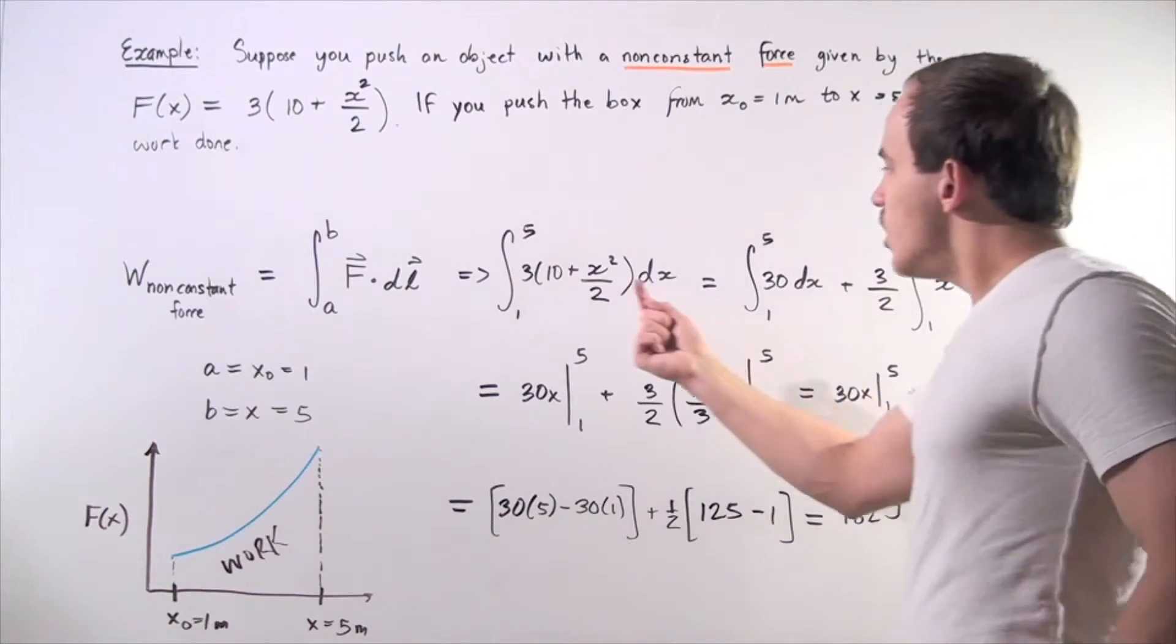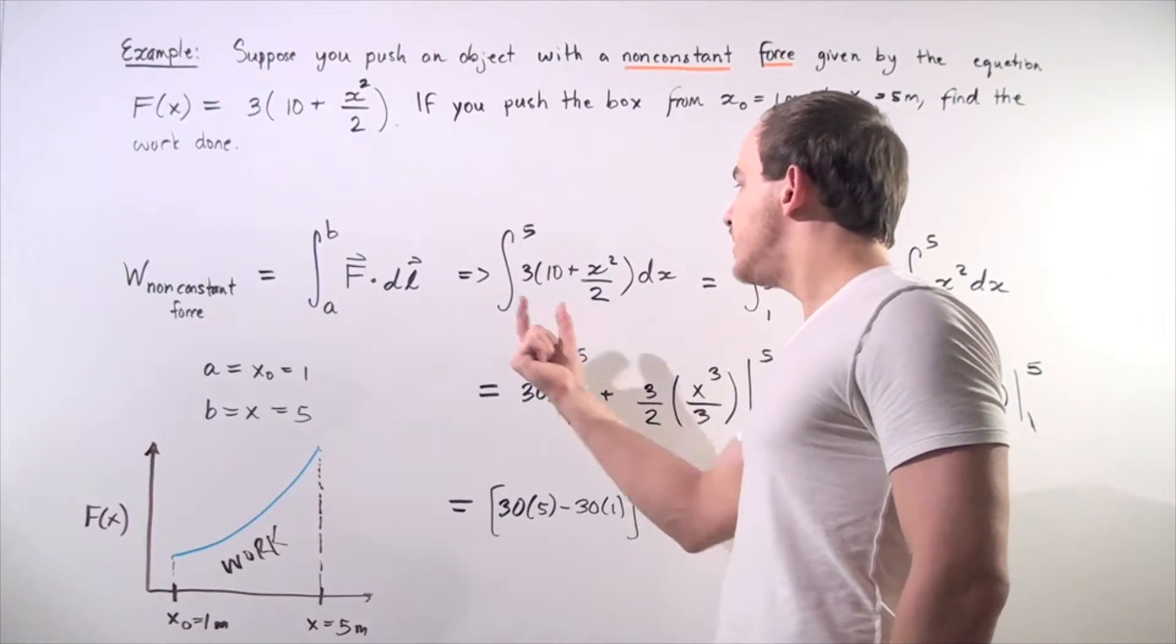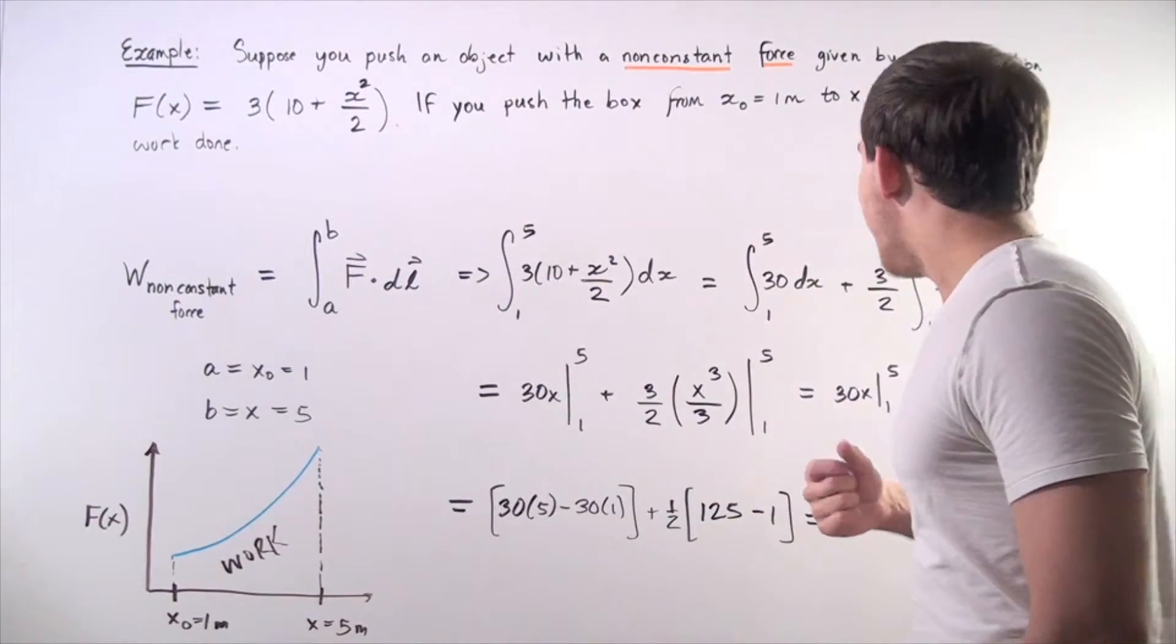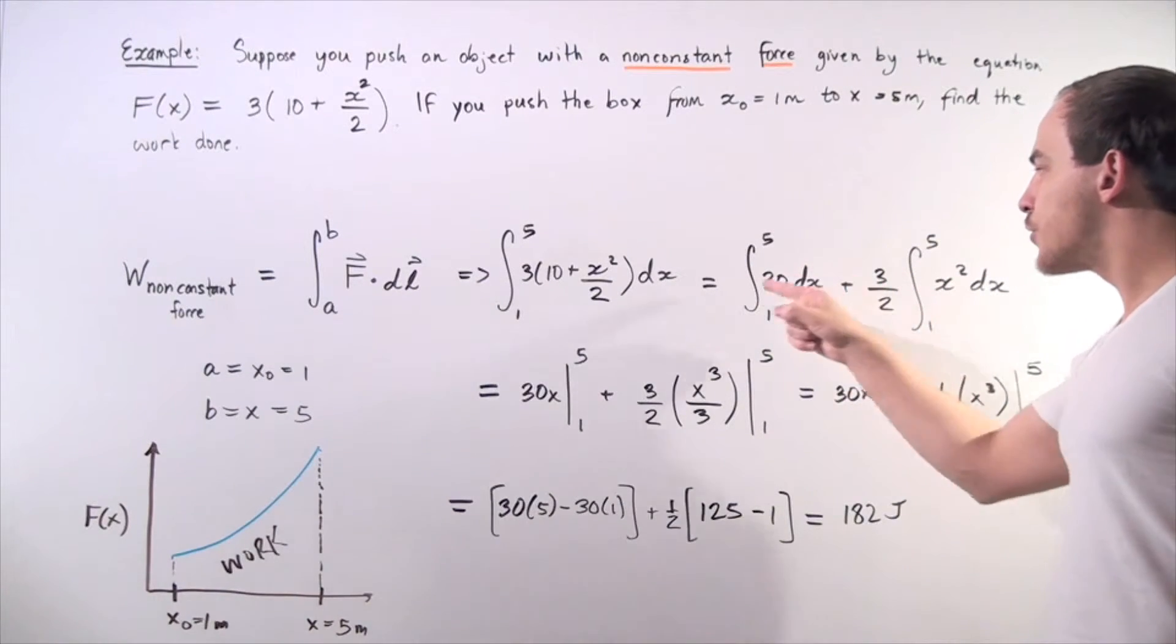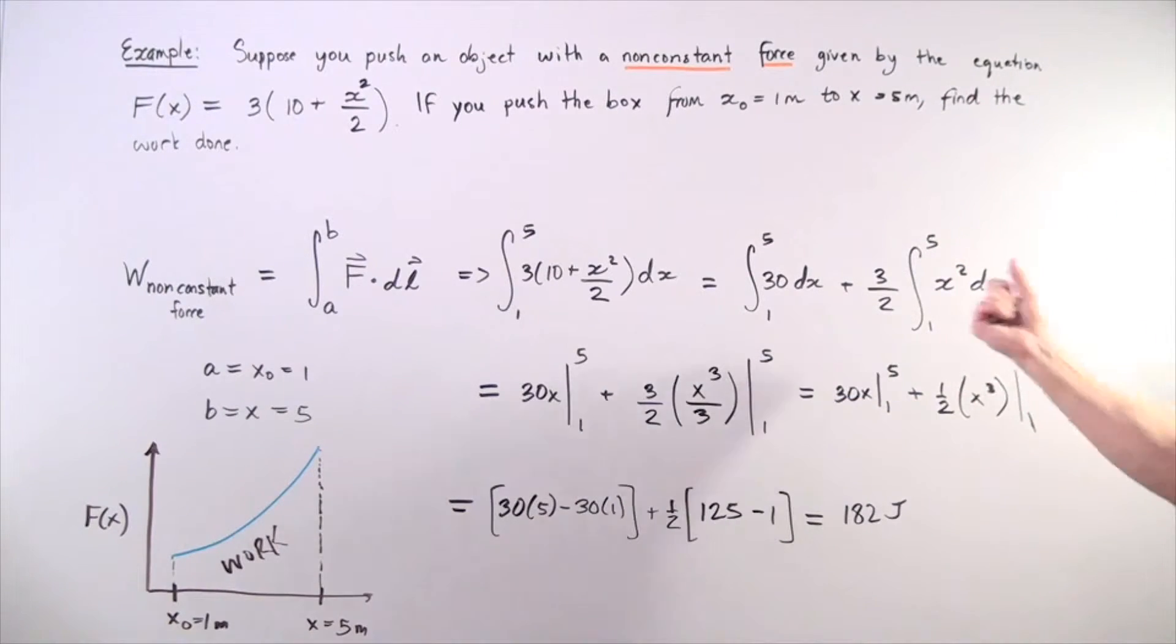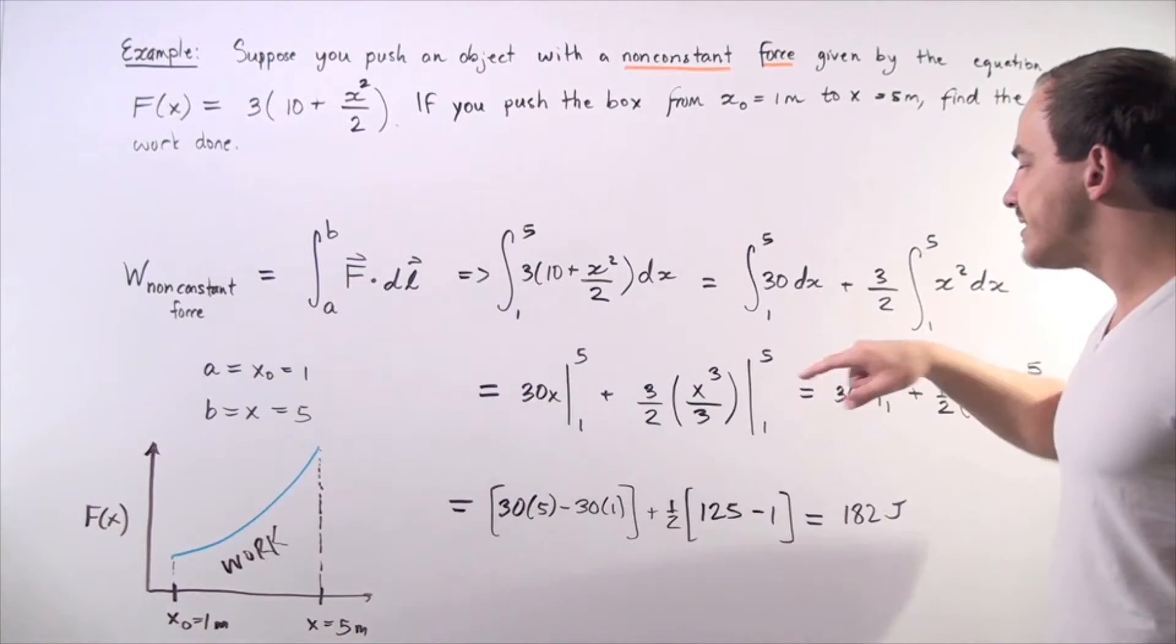We can multiply both sides by 3 and we distribute our integral and we get the following result. Notice for this term, we brought out our constant 3 divided by 2. So, we integrate this, we get 30x from 1 to 5 and we integrate this, we get x cubed divided by 3 multiplied by 3 divided by 2 from 1 to 5.